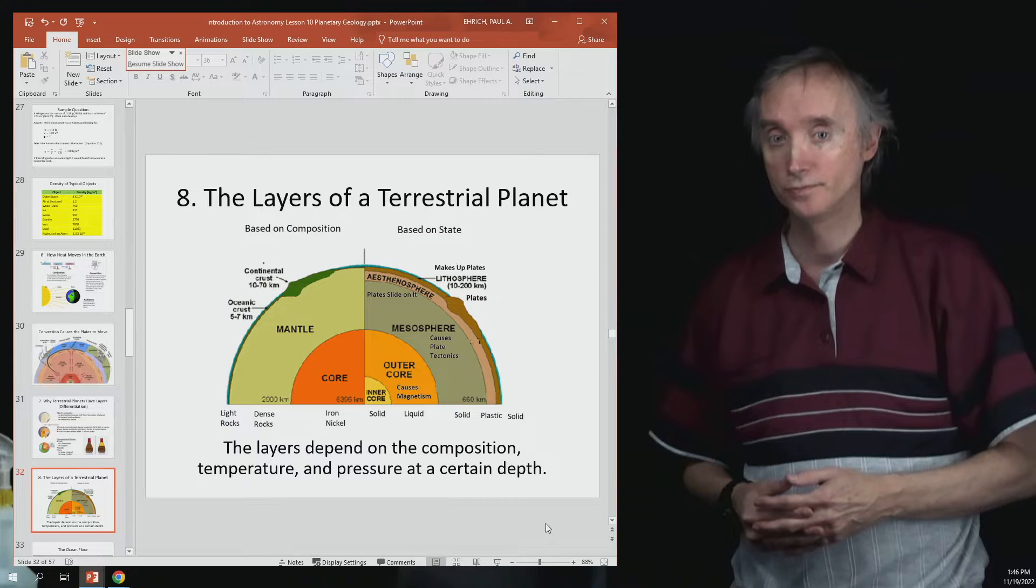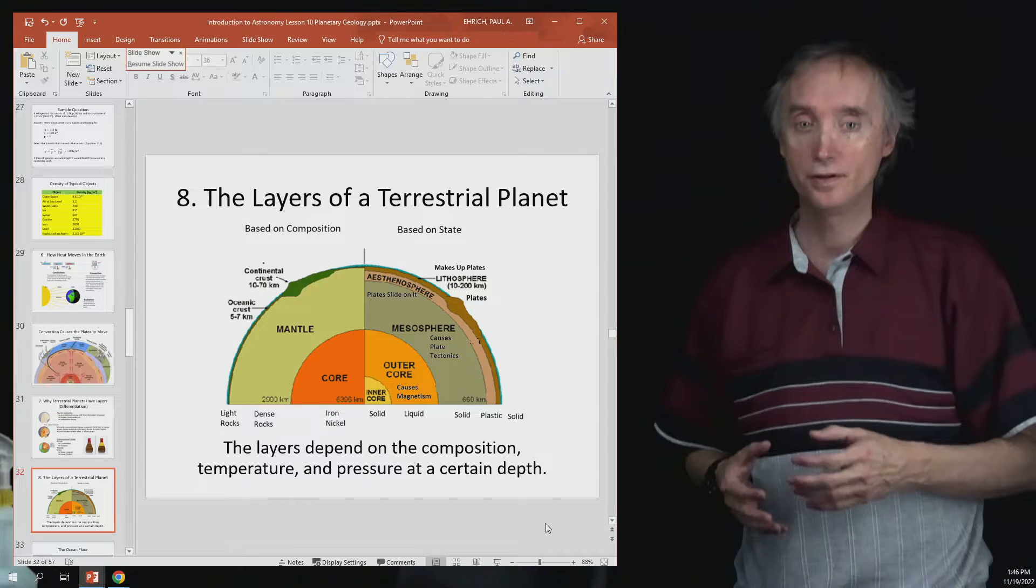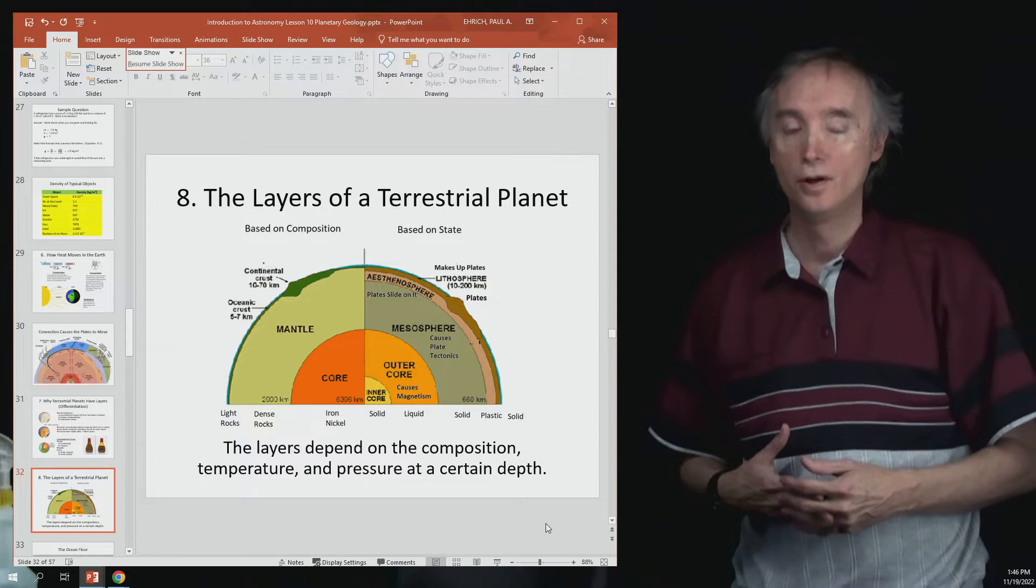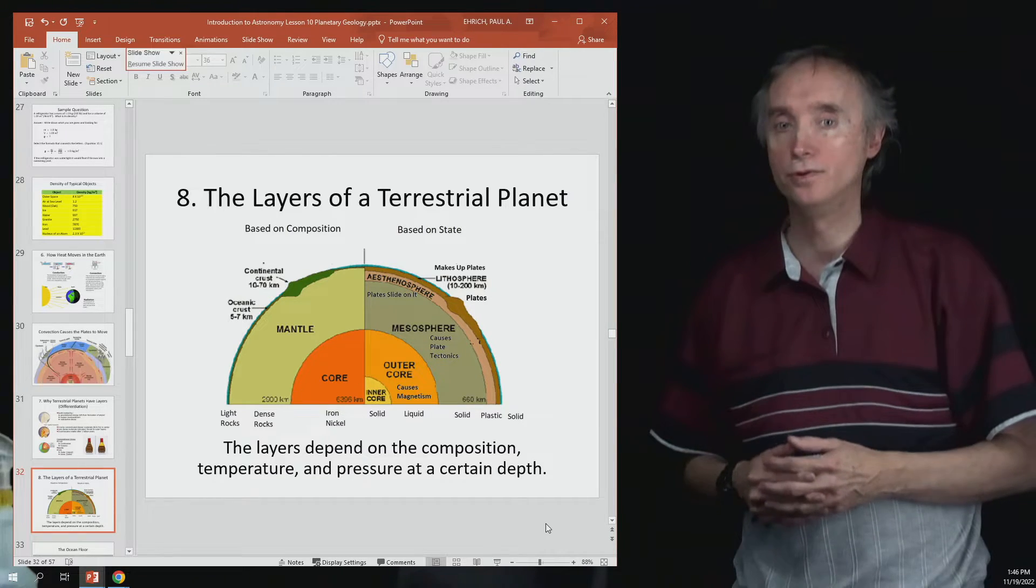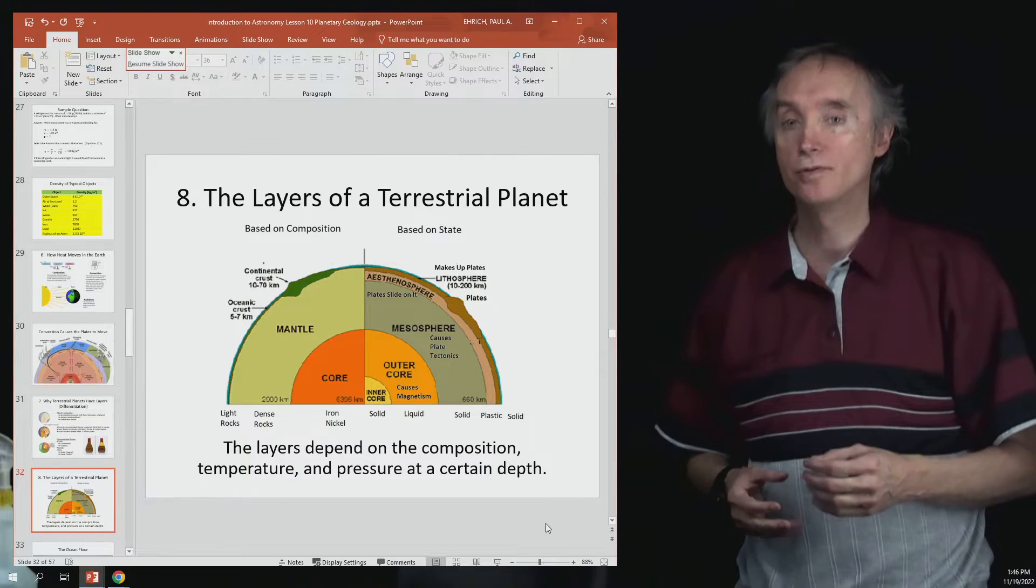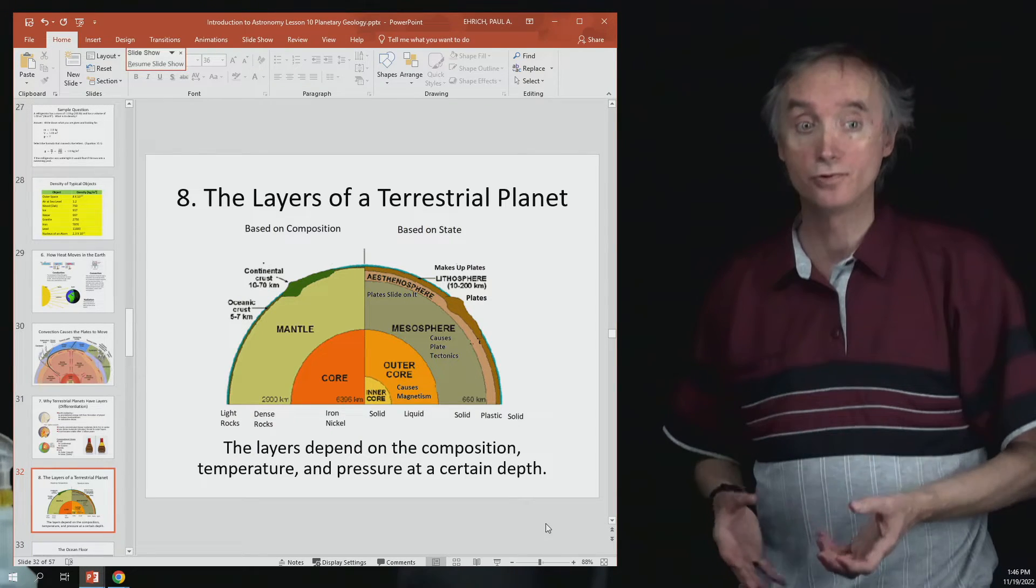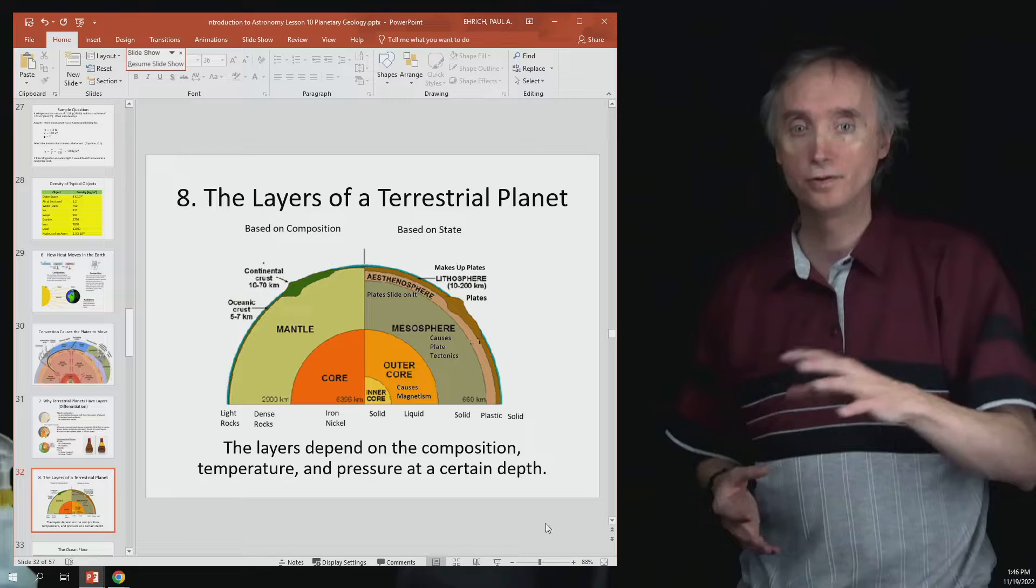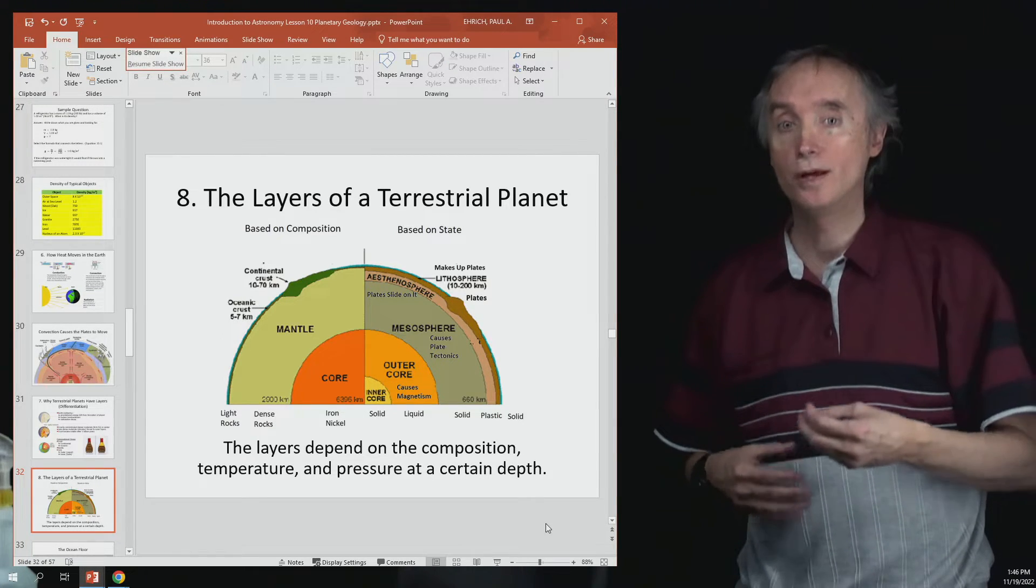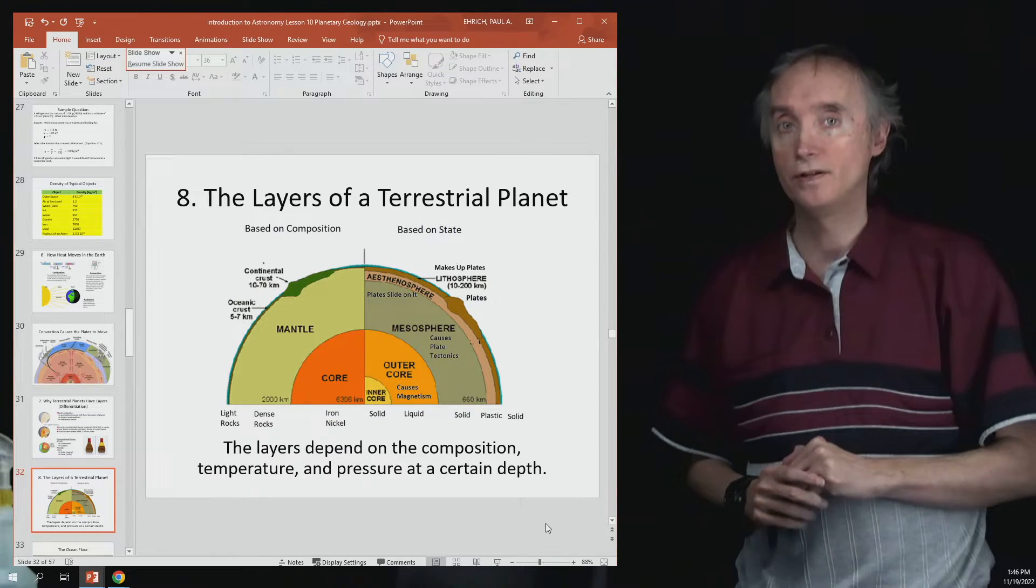Okay then along comes the Cold War between the United States and Russia and one of the things that we needed to know was how big were their nuclear weapons and the way that we would do it was we would measure the earthquake waves generated by those explosions. And so we covered the surface of the Earth in seismic meters that would be able to detect the miniature earthquakes released when one of these bombs would go off.